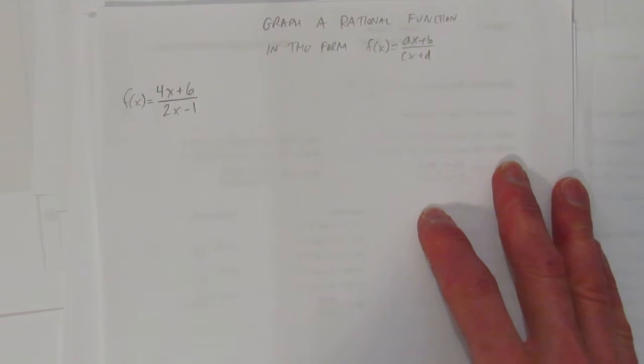In this video, we'll look at how to graph a rational function in the form f(x) = (ax+b)/(cx+d). In other words, a line over a line, or a line divided by a line.